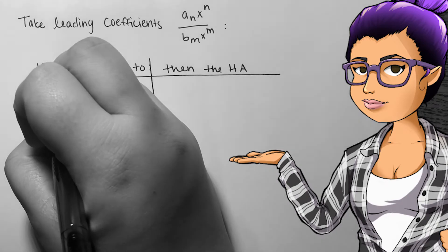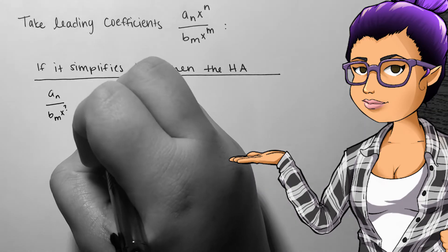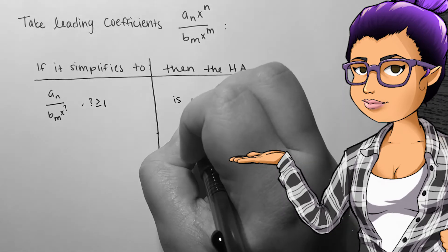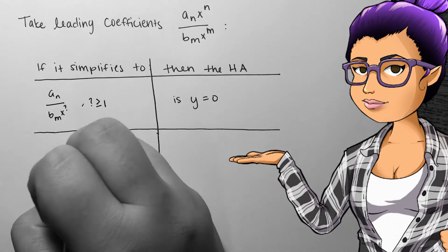If the two leading terms are divided and simplified, giving us something that resembles the reciprocal function, where the degree on bottom is larger, then we will have a horizontal asymptote at y equals zero, with end behavior going towards zero on both ends.